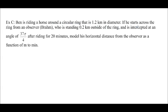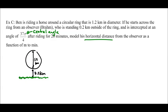Ben is riding a horse around a circular ring that is 1.2 kilometers in diameter. So he starts across the ring from an observer, Brahm. And Brahm is 0.2 kilometers outside of the ring. Ben is intercepted after an angle of 37π over 4. So that's actually his central angle. So as he travels around the ring, the central angle that he has completed is 37π over 4. And he's ridden for 20 minutes. Model his horizontal distance from the observer as a function of meters to minutes. And by horizontal distance, we mean, like, let's say Brahm is hiding behind a hedge over here. Then it's the distance from that hedge.